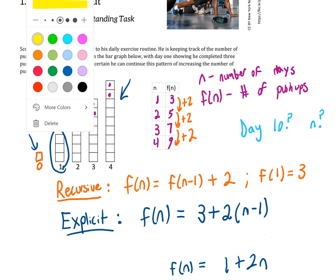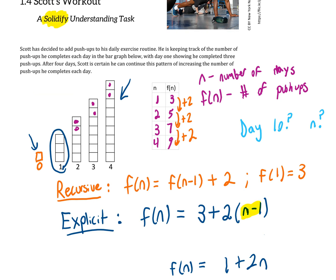The best way to understand why this n minus one is necessary is to look back at the table we originally created. In the second row, how many times have we added two to our original number of three? We'd only added it once. When we got to the third row, we had added two twice. When we got to the fourth row, we had added two three times.